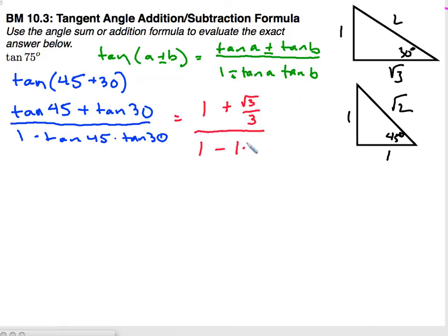So I end up having this fraction here, 1 plus square root of 3 over 3 all over 1 minus square root of 3 over 3.